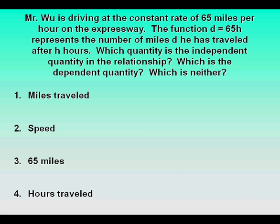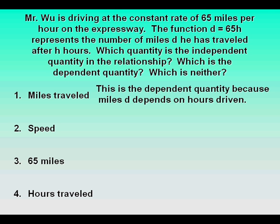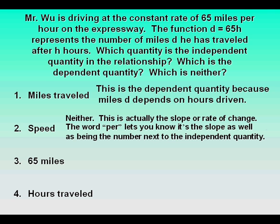Another problem. Mr. Wu is driving at the constant rate of 65 miles per hour on the expressway. The function d equals 65h represents the number of miles d he has traveled after h hours. Which quantity is the independent quantity? Which is the dependent quantity? Which is neither? Miles traveled is the dependent quantity because miles d depends on hours driven. The speed is neither — this is actually the slope or rate of change.